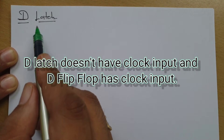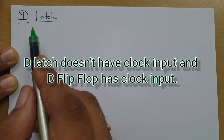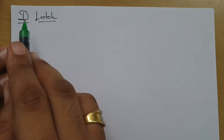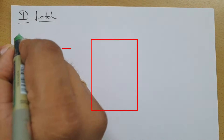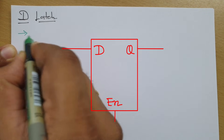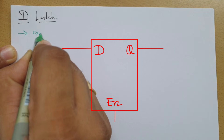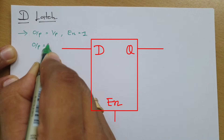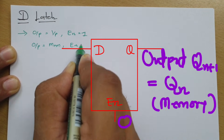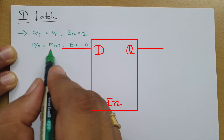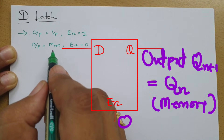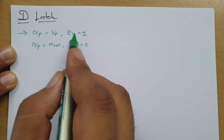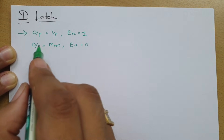In D-Flip-Flop, we have a clock signal as input, while in D-Latch, we don't have any clock signal as input. This is the first basic difference one should know regarding D-Latch. In D-Latch, our input will get transferred to output when enable equals 1. Our output will be similar to input provided enable equals 1, and our output will stay in memory state provided enable equals 0. Memory state means it will store the previous state.